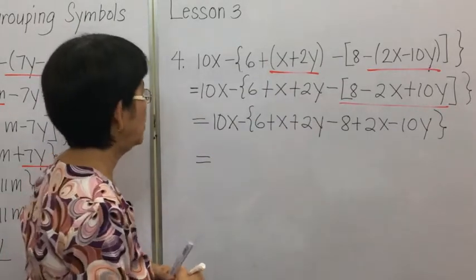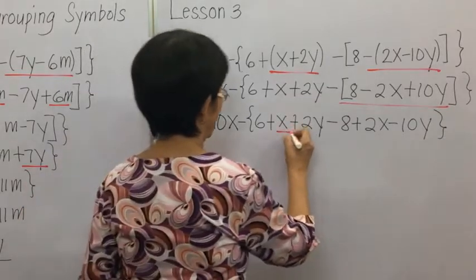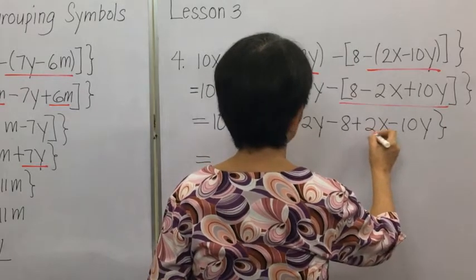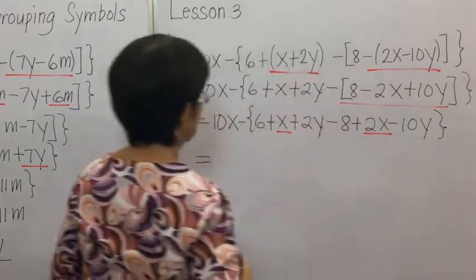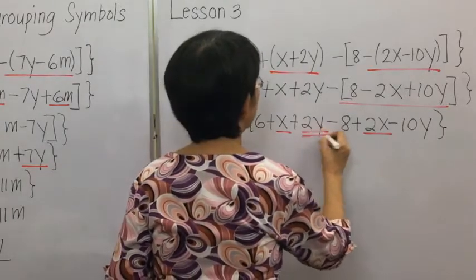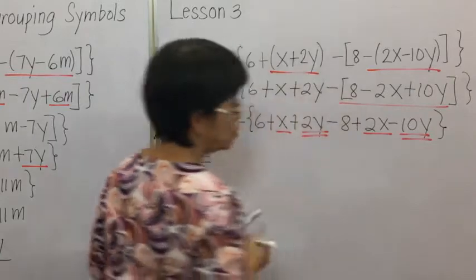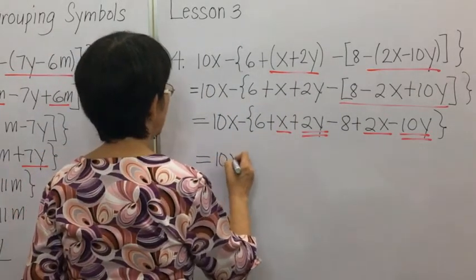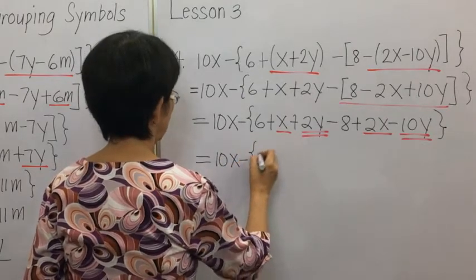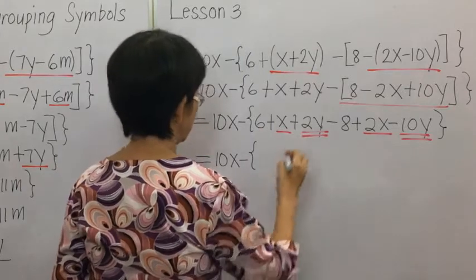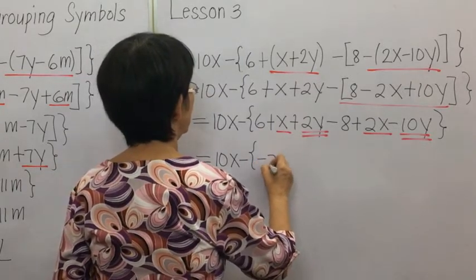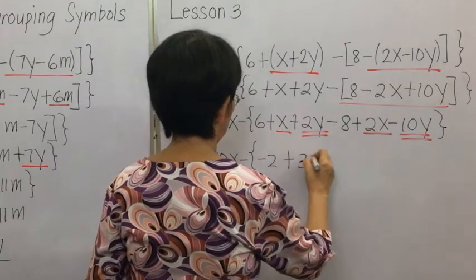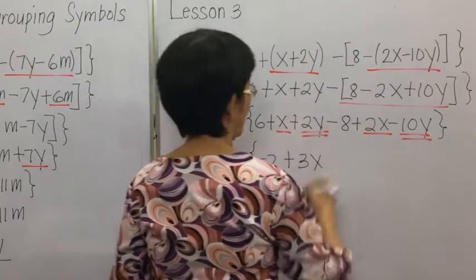Next, we simplify from within the braces. We combine X and 2X, and combine 2Y and negative 10Y, while copying 10X minus 6 minus 8. So we have negative 2X plus 2X, and 2Y minus 10Y inside.